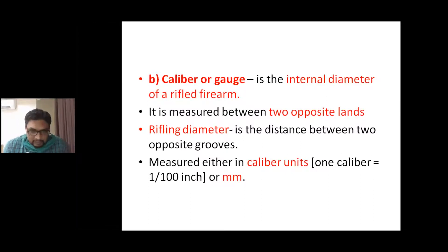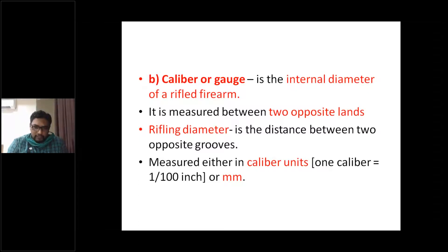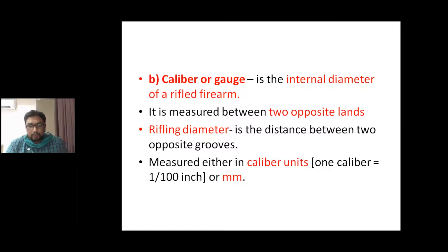Caliber or gauge is the internal diameter of a rifled firearm, while in smoothbore firearms it is called bore. It is measured between two opposite lands. Rifling diameter is the distance between two opposite grooves, whereas caliber is the distance between two opposite lands. It is measured in caliber units where one caliber equals one one-hundredth of an inch.